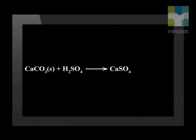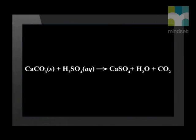We also know that this is a gas-forming reaction. Looking at the reaction, we can see that we have hydrogen atoms, oxygen atoms, and carbon atoms that need to form products. From this information, we can predict that the other products are water and carbon dioxide. In this example, there is only one exchange of negative ions. This is called a single displacement reaction.